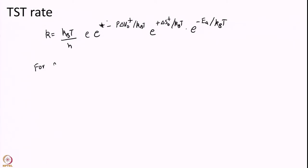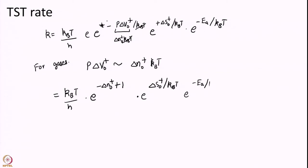Now, for gases even for liquid it can be partially true P delta V naught we will approximate as by ideal gas. So, PV equal to NKT ideal gas law. So, that is what we are going to do. It is just a crude approximation really and so I will get is P delta V I will write as delta N naught KT and KT will cancel here. So, I will get is e to the power of minus delta N naught dagger plus 1 into e to the power of delta S naught dagger over KT into e to the power of minus EA over KT.